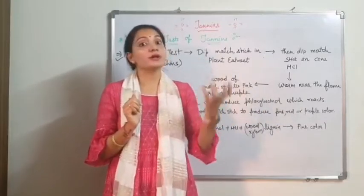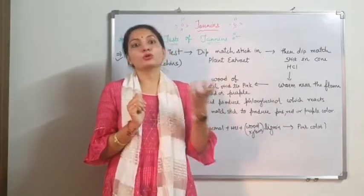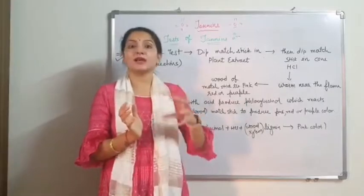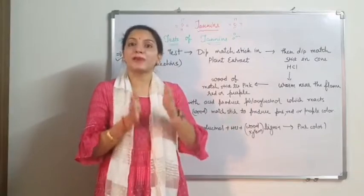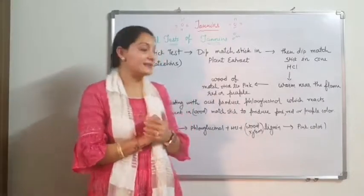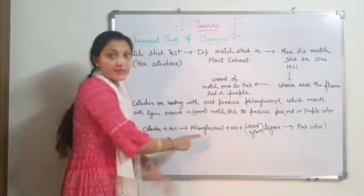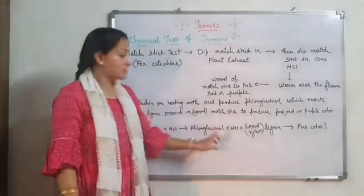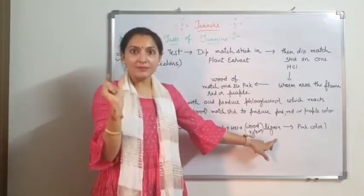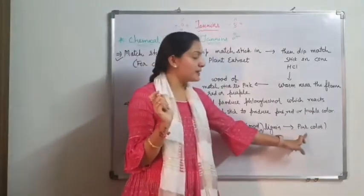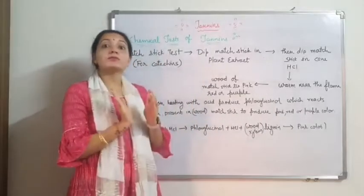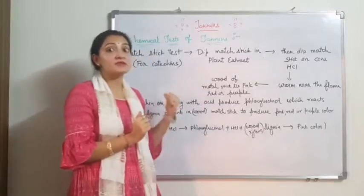To see lignin-containing cells they are converted to pink color in the presence of phloroglucinol and HCl — which is the same as what happens in the matchstick test. The matchstick wood contains xylem, and xylem contains lignin. When the matchstick is dipped in plant extract containing catechin, then dipped in concentrated HCl, catechin plus concentrated HCl produces phloroglucinol, which then reacts with the lignin in the xylem to give pink, red, or purple color. This is a specific test for catechin.